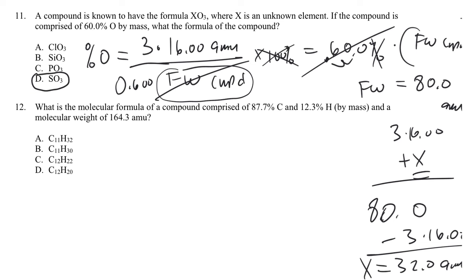A double check: SO3's formula weight is 32.0 plus 16 times 3, which is 80. Then 16 times 3 divided by 80 is 0.6, confirming 60% by mass oxygen. So question 11 is just using what a percent by mass is of a given element.